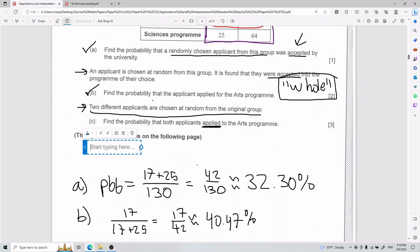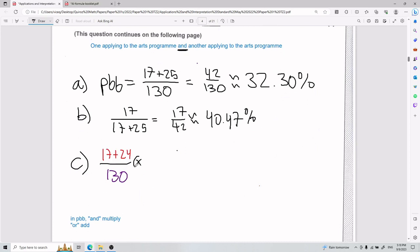and another applying to the arts program. So notice the keyword and here. Because I put and, I'm going to have this multiplication here. And what is the probability of one guy applying to the arts program? Well, it is right here.